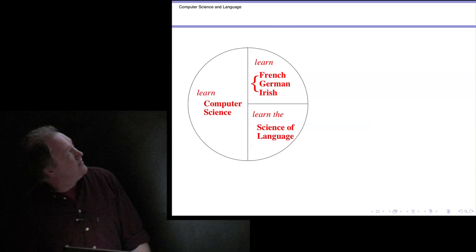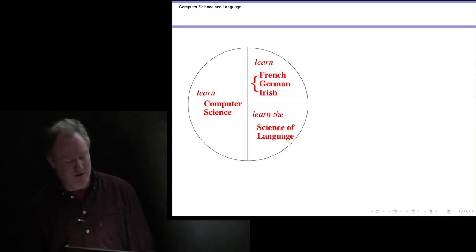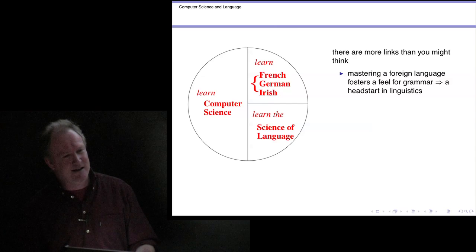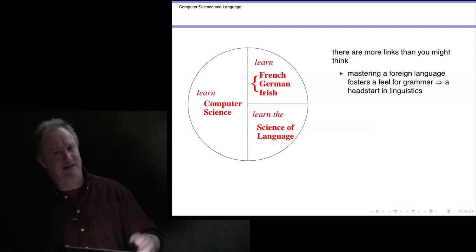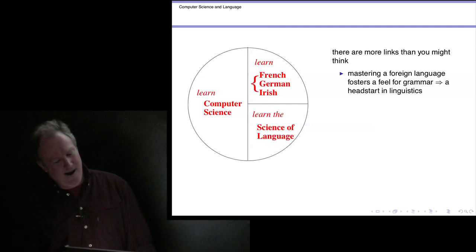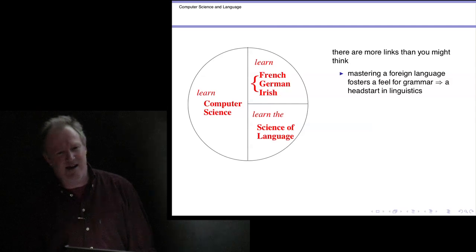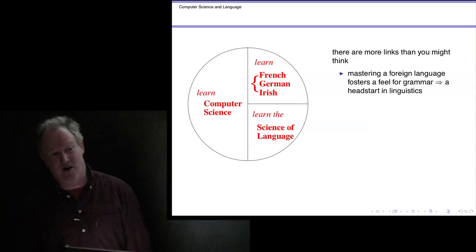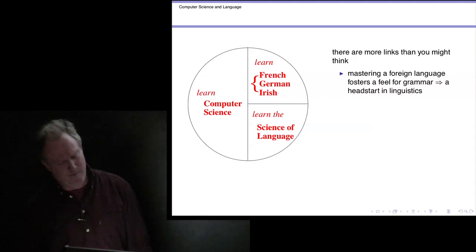So those are the three components: computer science, learning a particular language, and the science and technology of language. These things are actually more interrelated than you might think. Quite often people who have an aptitude for one of these things have an aptitude for the others. For example, people who have to master a foreign language have to become fairly keenly aware of grammar — much more aware of it possibly than people who aren't strenuously trying to learn a foreign language. So the part of the degree which is the scientific study of language, including the syntactic structures of language, is something you'll already have a head start in.